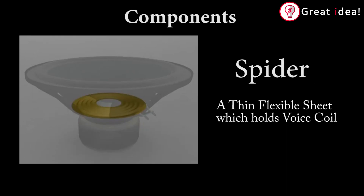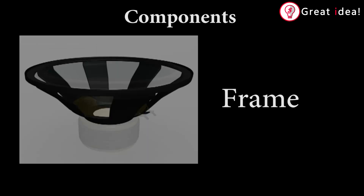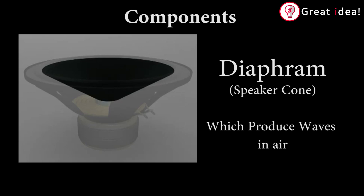This is a thin sheet and it is flexible. This is the voice coil. The voice coil moves and it is flexible. You can use the supply wires and the electrical input signals. This is an outer frame. In this frame, you can use the voice coil. You can use the diaphragm. This is a flexible sheet.